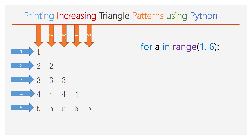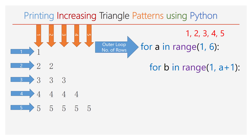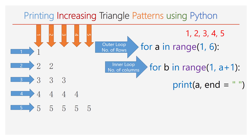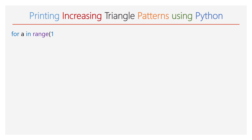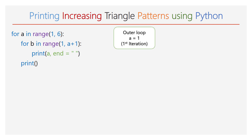The outer for loop has a range of 1 to 6, iterating for 5 times. The outer for loop will decide the number of rows. The inner for loop is made as a function of the outer for loop — based upon the value of a, the inner for loop will be iterated. A print function with argument a and the end attribute is used, along with one empty print function. Let us see what values of a and b hold during each iteration and what will be printed in the output.